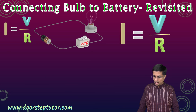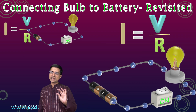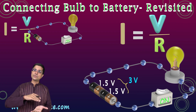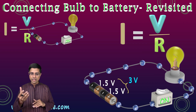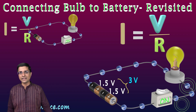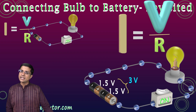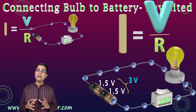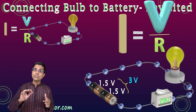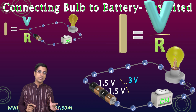Now imagine what would happen if instead of having just one battery, I had two batteries in a circuit. Previously I had only one battery and the bulb was glowing. Now I add another similar battery such that their EMFs are added — connecting the anode of one battery to the cathode of the other. The voltage in the circuit would increase, and correspondingly the current would also increase. As the current increases, the heat generated by the lamp would also increase — more electrons hitting the filament, more heat generated, so the lamp would grow brighter.